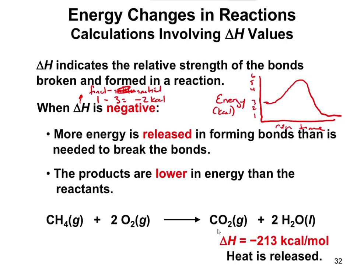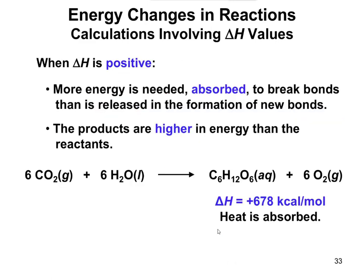So that's how this works. If you look at the reaction on the bottom, it says that in this particular combustion reaction where you have CH4, methane, reacting with oxygen to form CO2 and water, heat is released to the tune of negative 213 kilocalories per mole. So when delta H is positive, the products are higher in energy than the reactants.